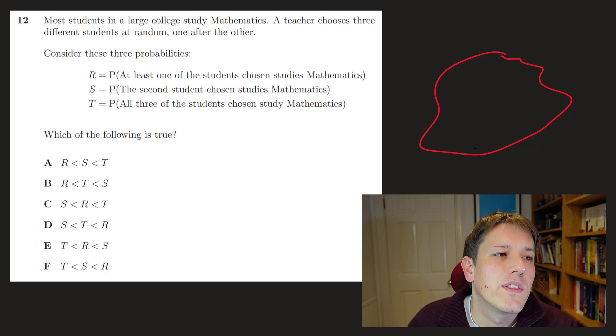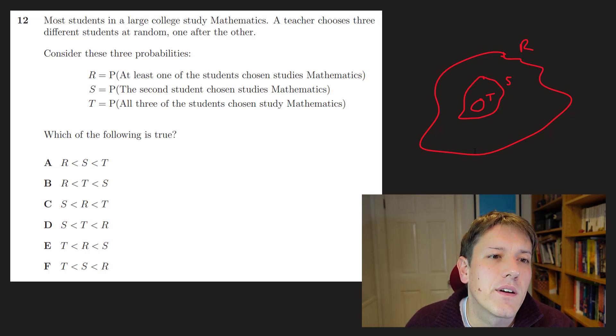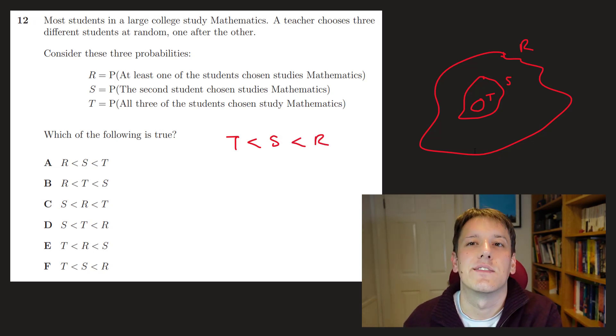Because if you think about it, so we've got at least one of the students chosen studies maths, the second student chosen studies maths, and all three of the students chosen study maths. So if you sort of think of this in a sort of Venn diagram of all possibilities or something. The second, so we've got at least one of the students studies maths, R might be this sort of set here, and the second student chosen studies maths, well, if the second student chosen studies maths, then that doesn't mean at least one of them studies maths, so S is like a subset of R here. So every time the second student chosen studies maths, it must be that also at least one of the students studies maths, and if all three of the students chosen study maths, well, then it must be that the second one studies maths, so actually T here has to be a subset of S, so the probability T has to be the smallest probability, and then S is going to be the next, and then R is going to be the next. If they weren't literally subsets of each other, I'd have to think of it more carefully, but no issue at all here, so we've got that the answer is F.